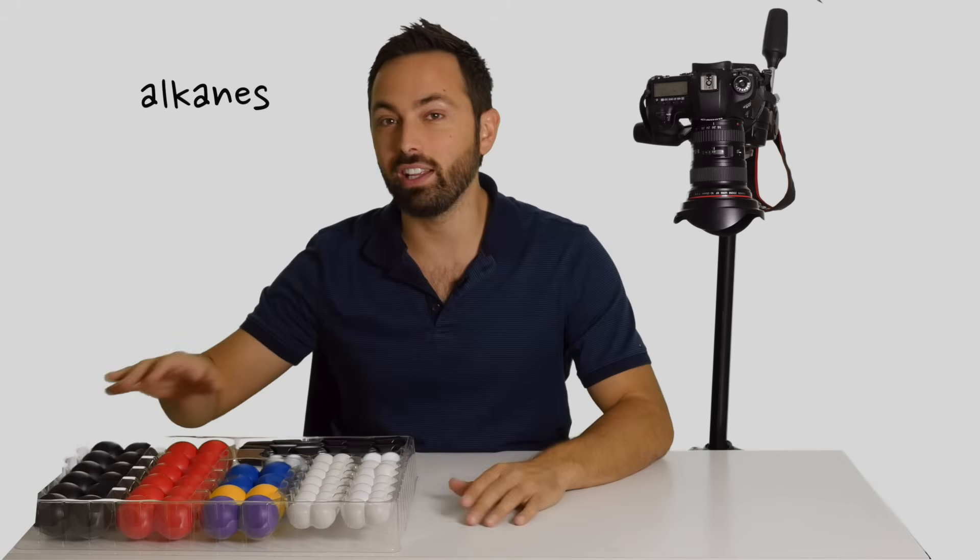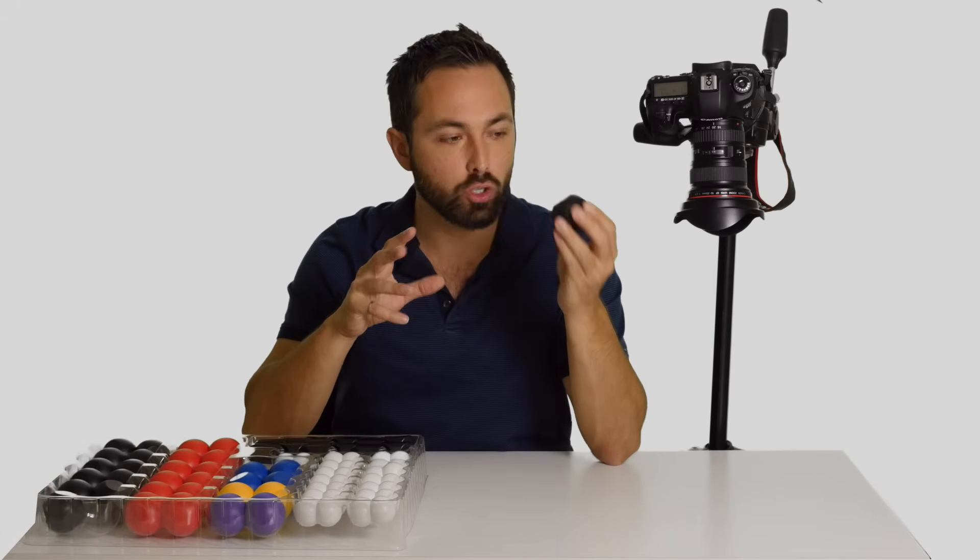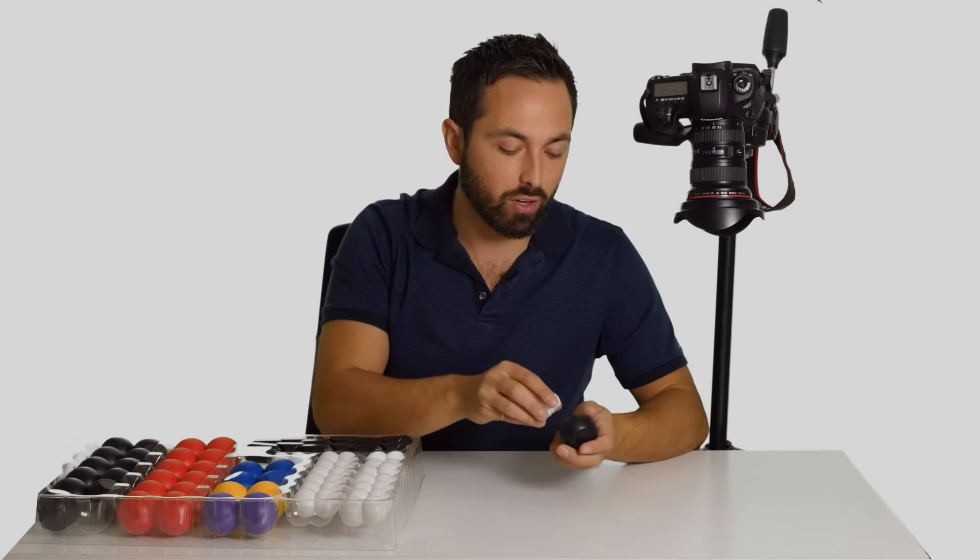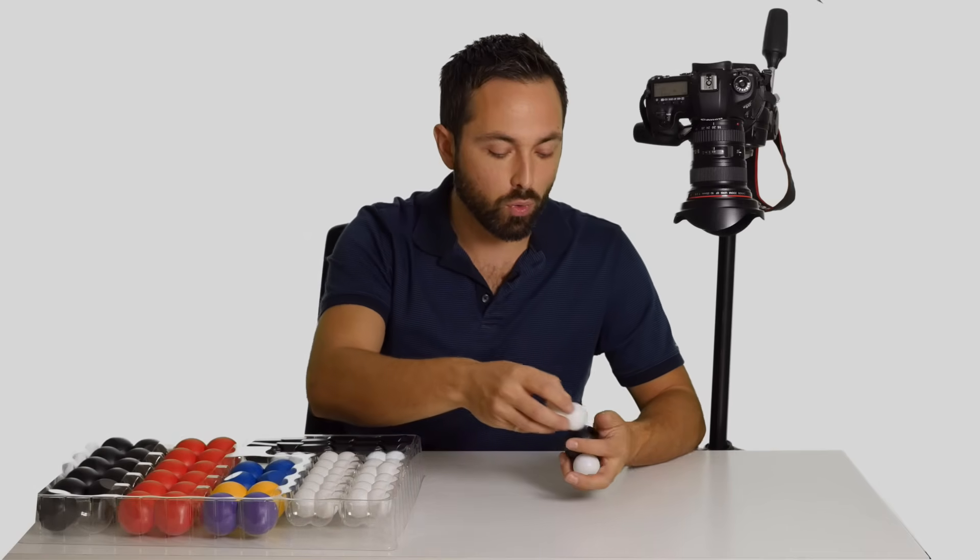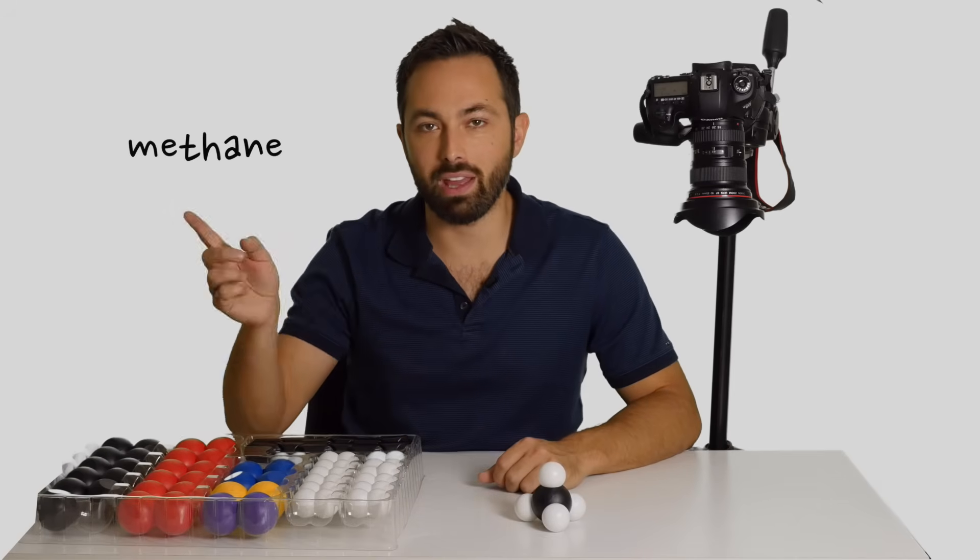Well, the alkanes are pretty simple. They are molecules that are just made of two elements: carbon and hydrogen. So the simplest alkane we can make is a carbon bonded to four hydrogen atoms. That gives you methane.